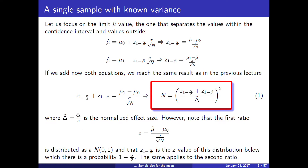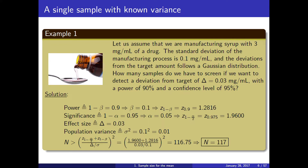Here is an example. You are manufacturing a syrup with 3 mg per milliliter of a drug. The standard deviation of the manufacturing process is 0.1 mg/mL and deviations from target follow a Gaussian distribution. How many samples do we need if we want to detect deviations as small as 0.03 mg/mL, with a statistical power of 90% and a confidence level of 95%?